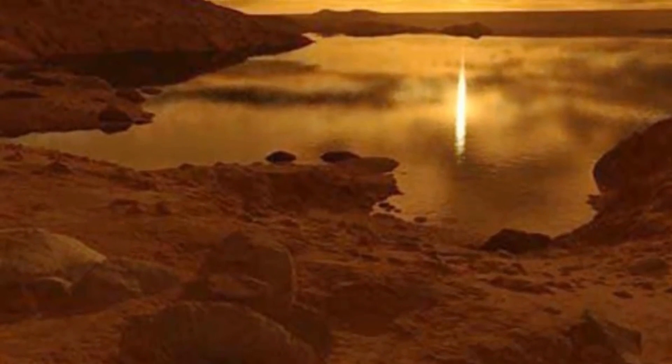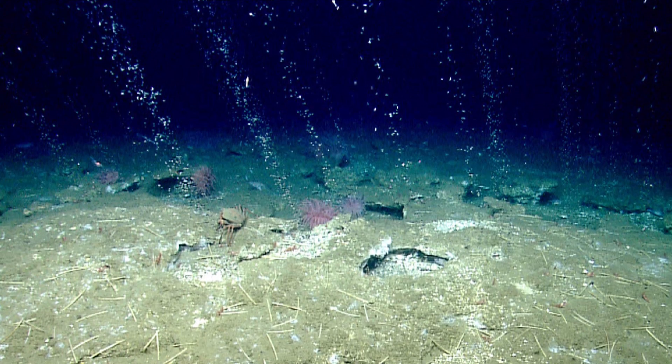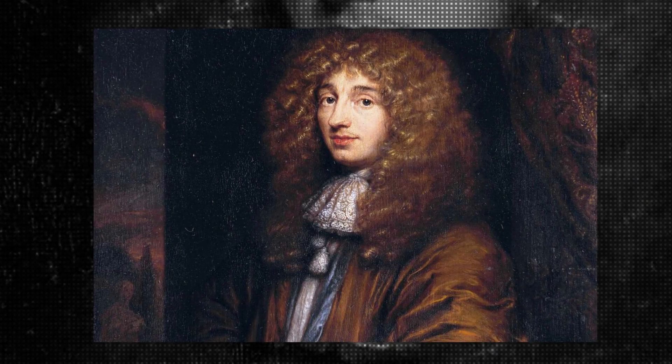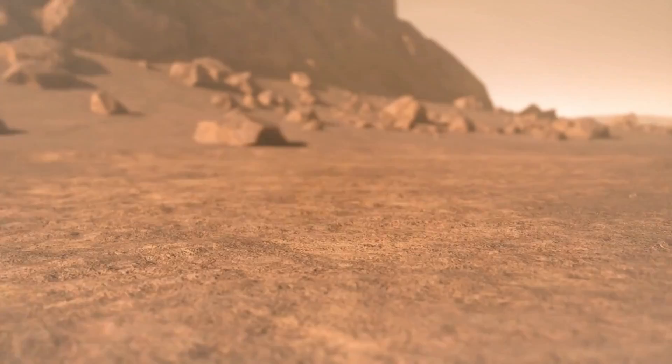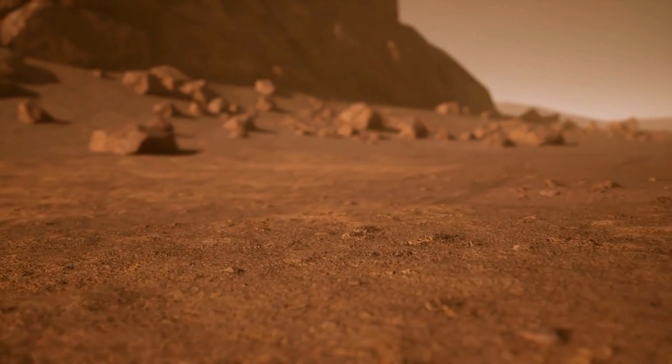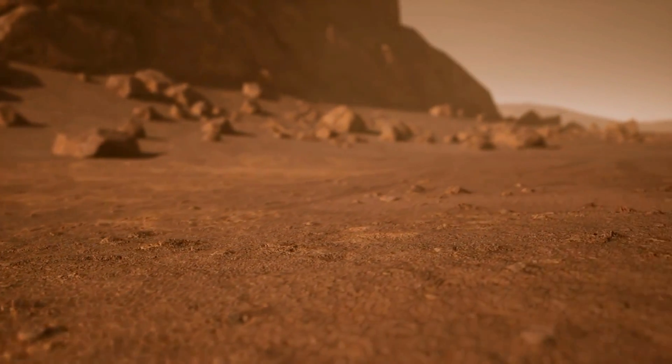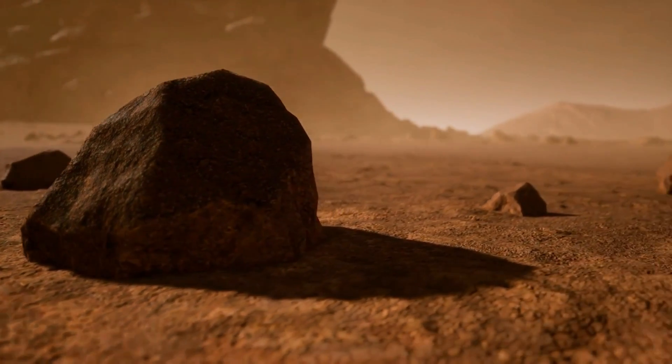Titan also has some dark areas. Scientists hypothesized that this was the location of the methane oceans. However, when Huygens landed in that exact location, it discovered no liquid. Closer inspections revealed that these dark spots are deserts. When they were compared against Earth's deserts, it became clear they are extremely similar and formed as a result of the same processes as on Earth.